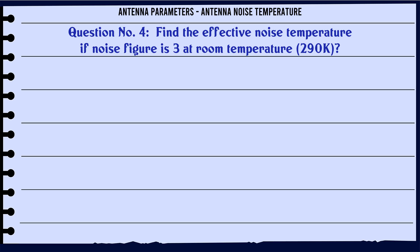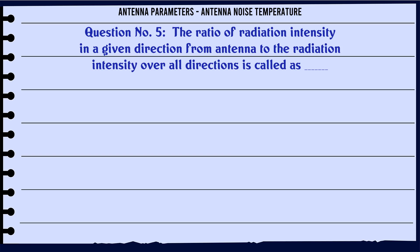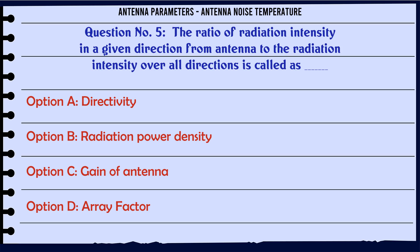Find the effective noise temperature if noise figure is 3 at room temperature 290 K. Option A: 290 K. Option B: 580 K. Option C: 289 K. Option D: 195 K. The correct answer is 580 K.